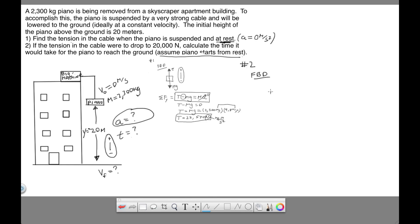It's going to be the same as what we did in number one. So we have mg down and tension up. And we're told that the tension is 20,000 newtons.